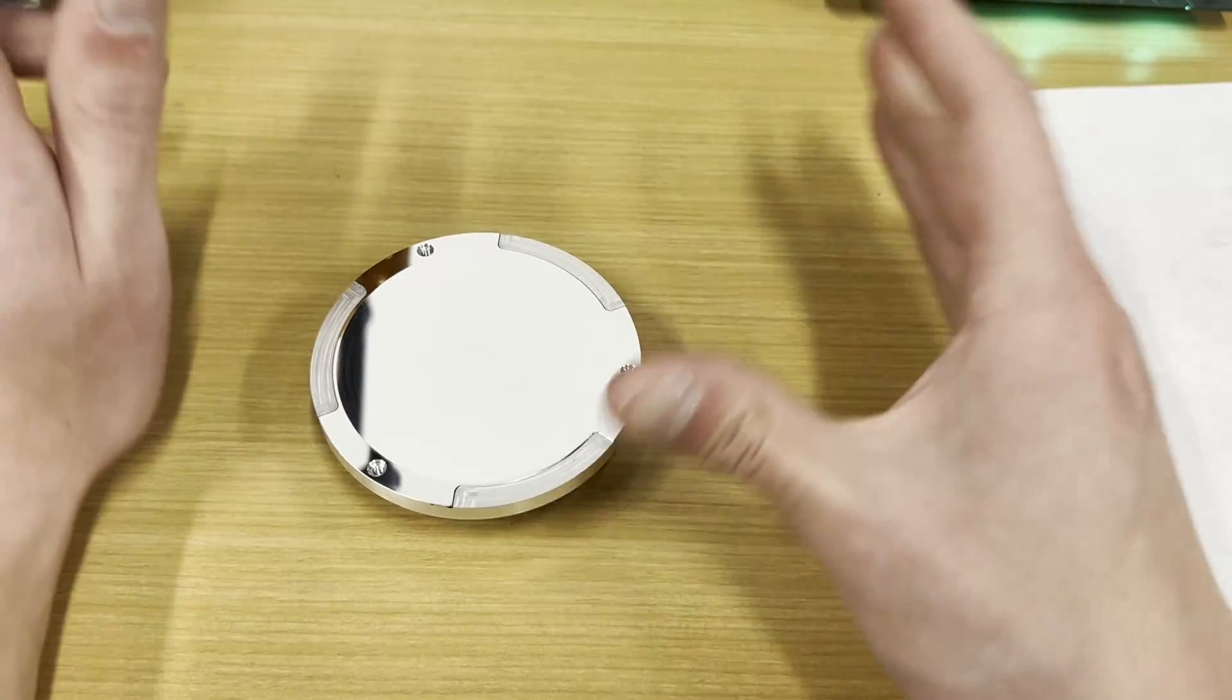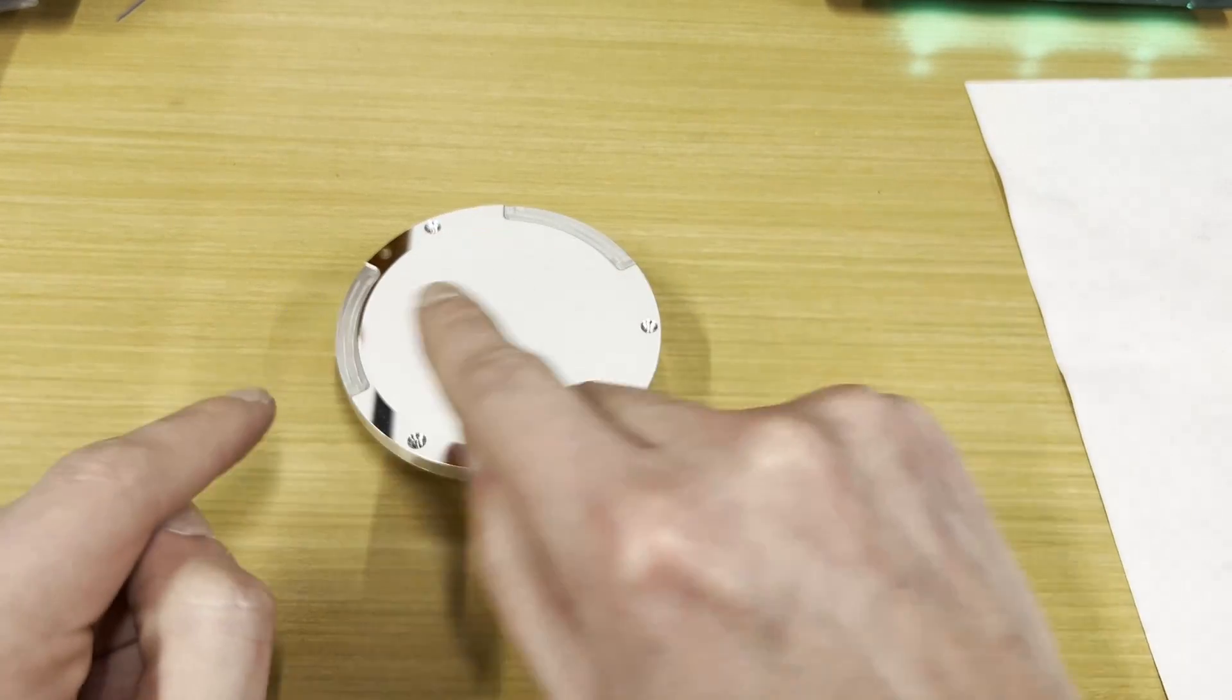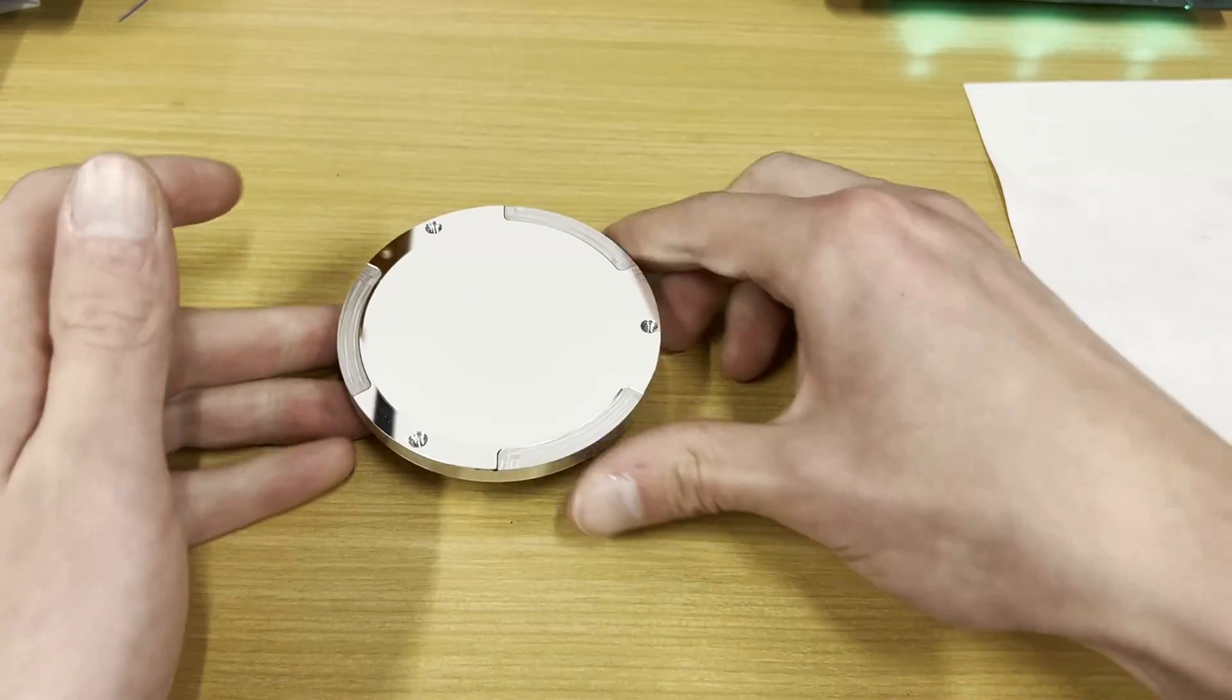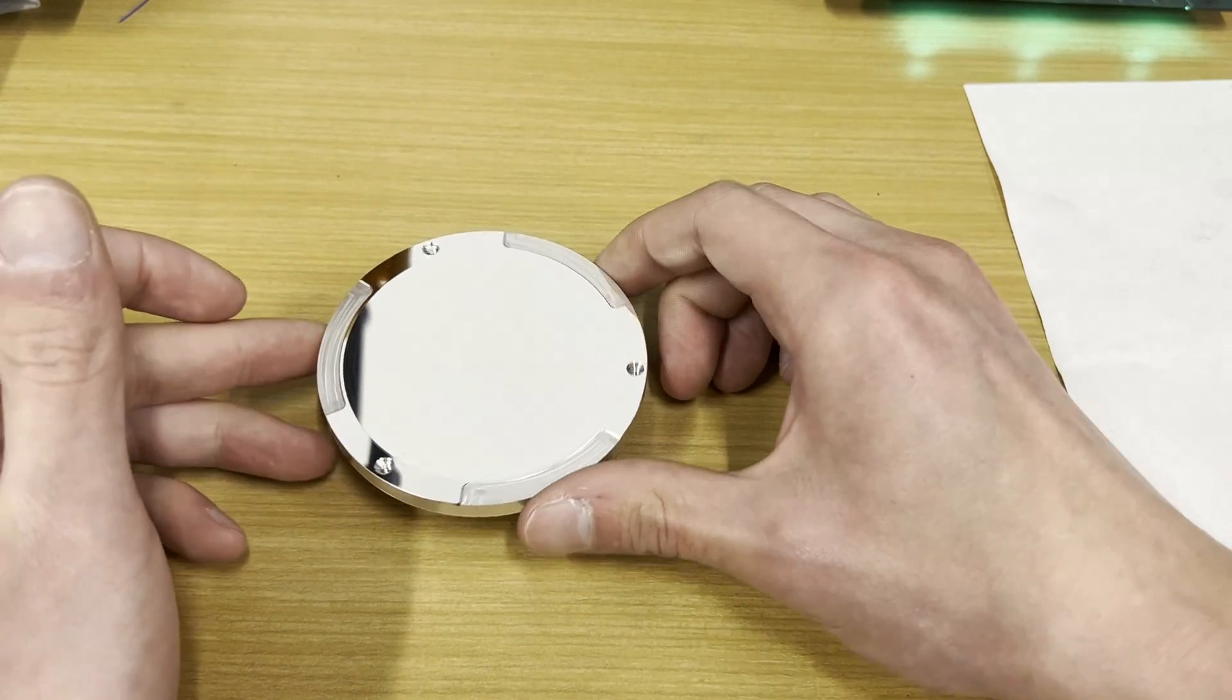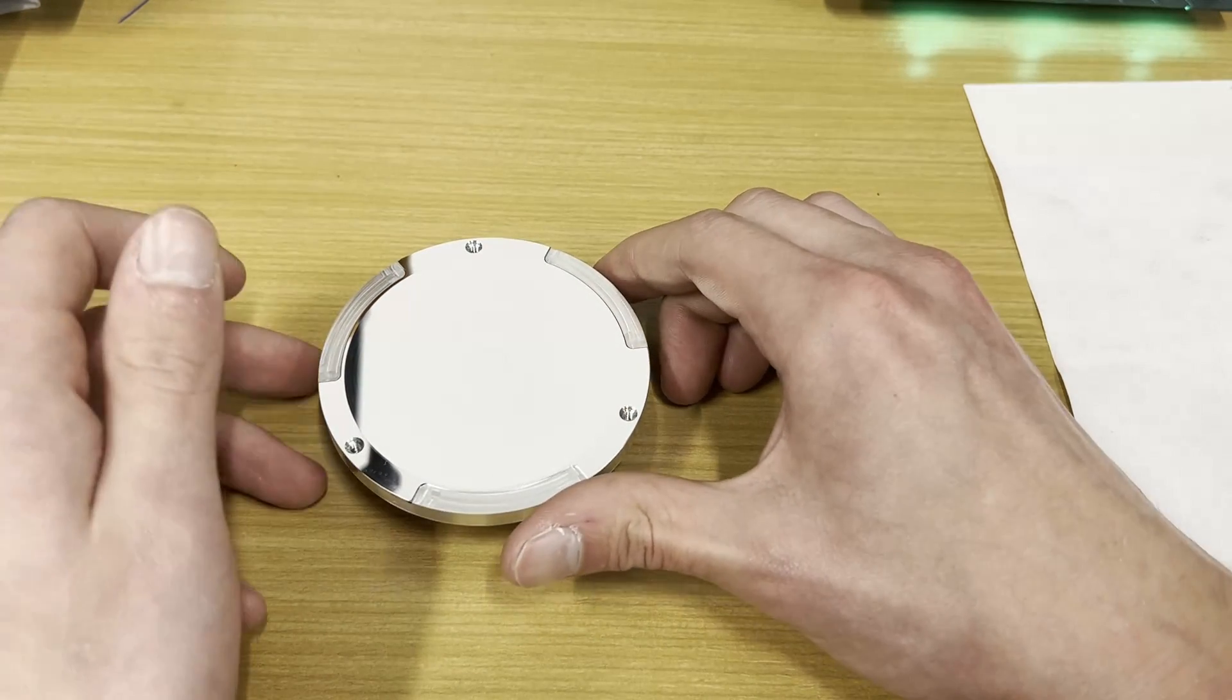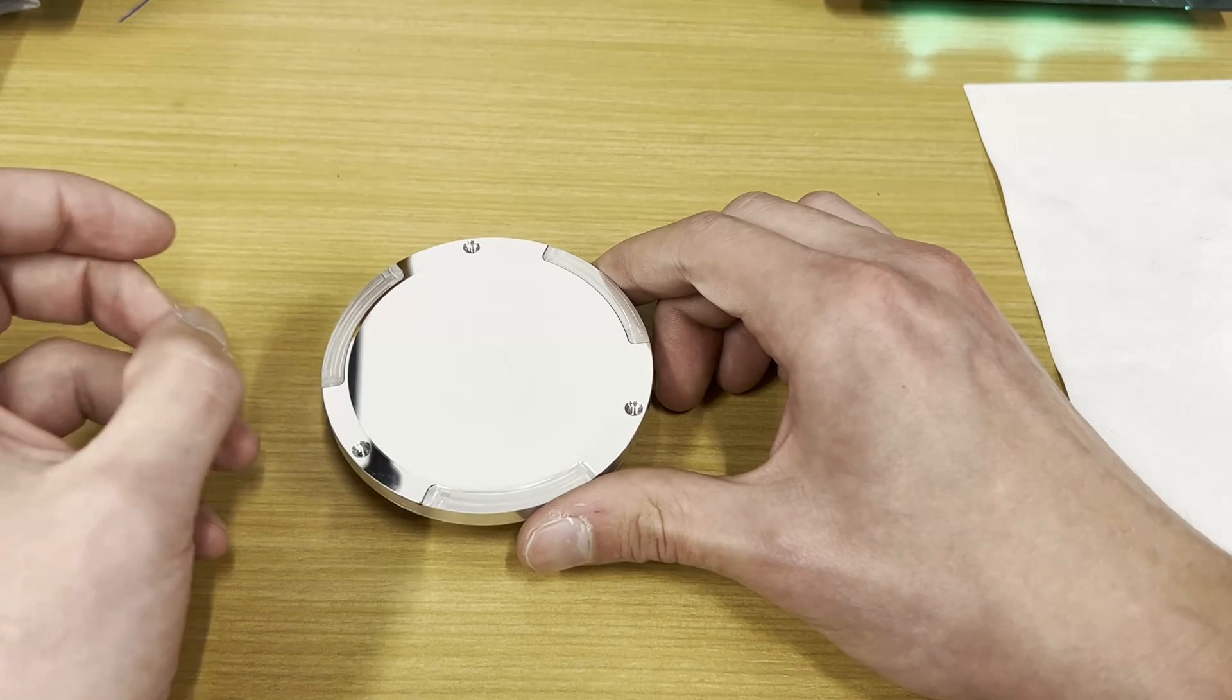What we care about and what this whole project's about is the form. How accurate is that spherical shape across the whole aperture of the mirror? And is it going to be good enough to see something with?